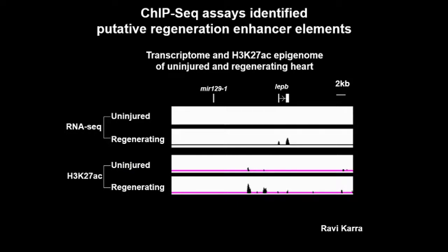Enhancers are marked by specific histone modifications, such as acetylation on lysine 27 of histone H3 (H3K27ac). To identify TREEs, we performed ChIP sequencing against the H3K27ac antibody using uninjured and regenerating heart. The upper panel shows RNA sequencing data — Leptin B transcript level is highly increased during regeneration. The lower panel shows the H3K27ac ChIP-seq profile. The analysis identified two regions marked by H3K27ac. By promoter reporter assay, we confirmed that the proximal fragment could not drive GFP expression during regeneration, so we focused on the distal fragment.